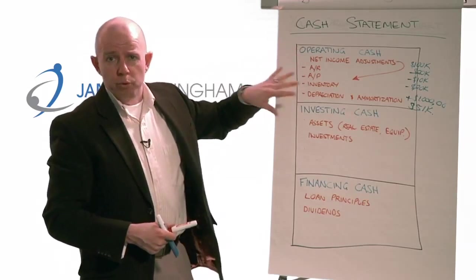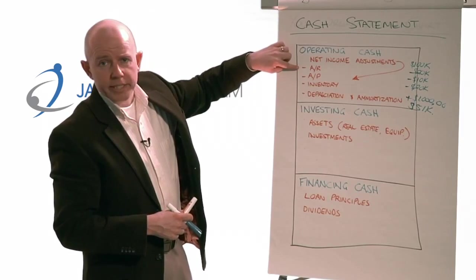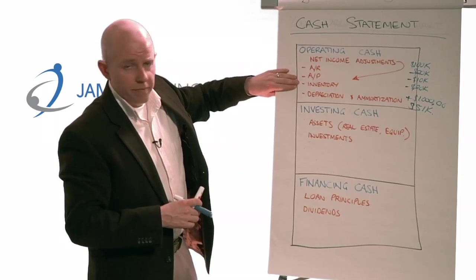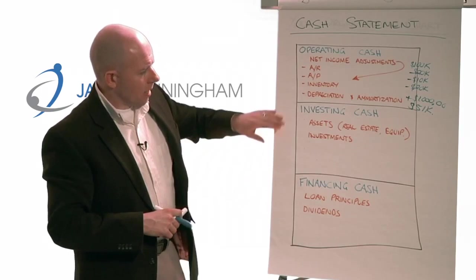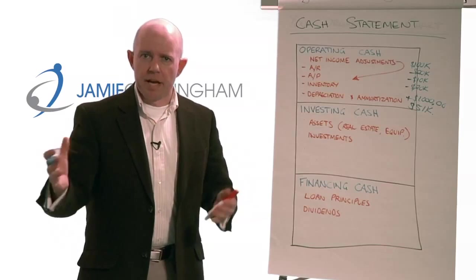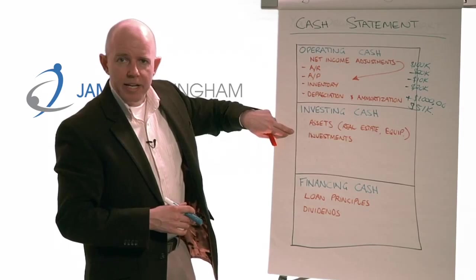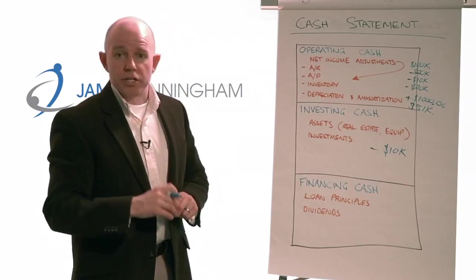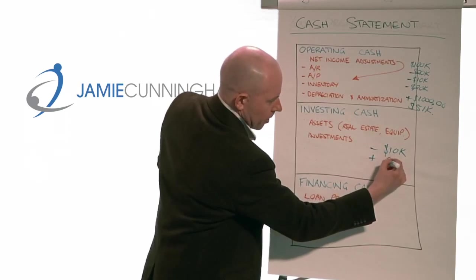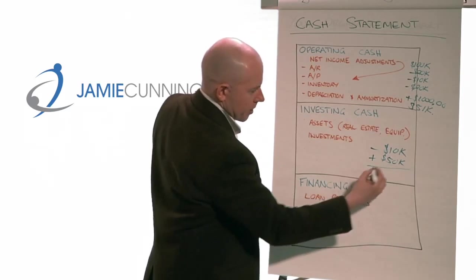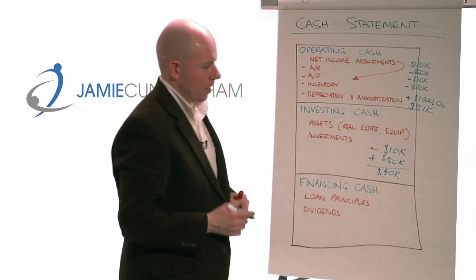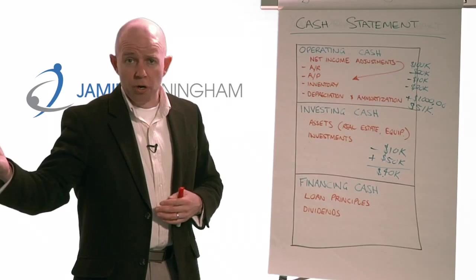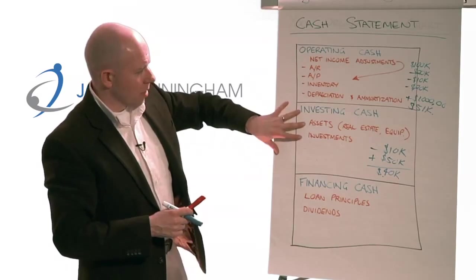If you want to improve your cash flow, you know the areas to look at: collecting receivables faster, managing payments so you stay within the right cash balance, and managing inventory so you're not holding more than you need. Investing cash is essentially buying or selling assets — like the $10,000 piece of equipment you bought, or selling real estate for $50,000. The buying and selling of assets and investments shows up in this area. In our example, that gives $40,000 in net investing cash flow.